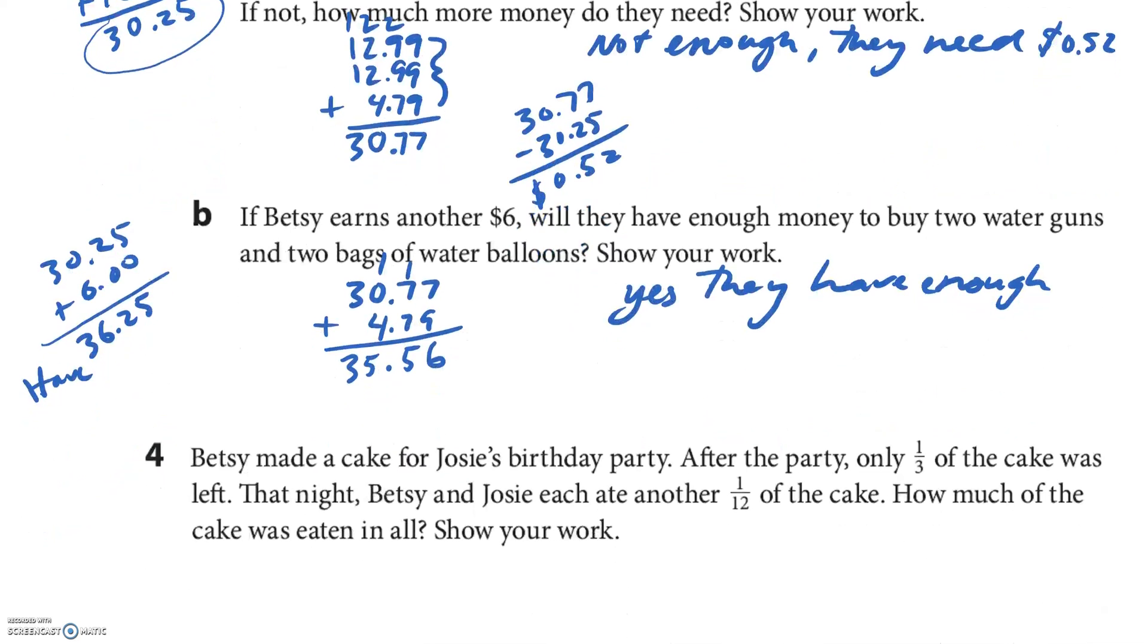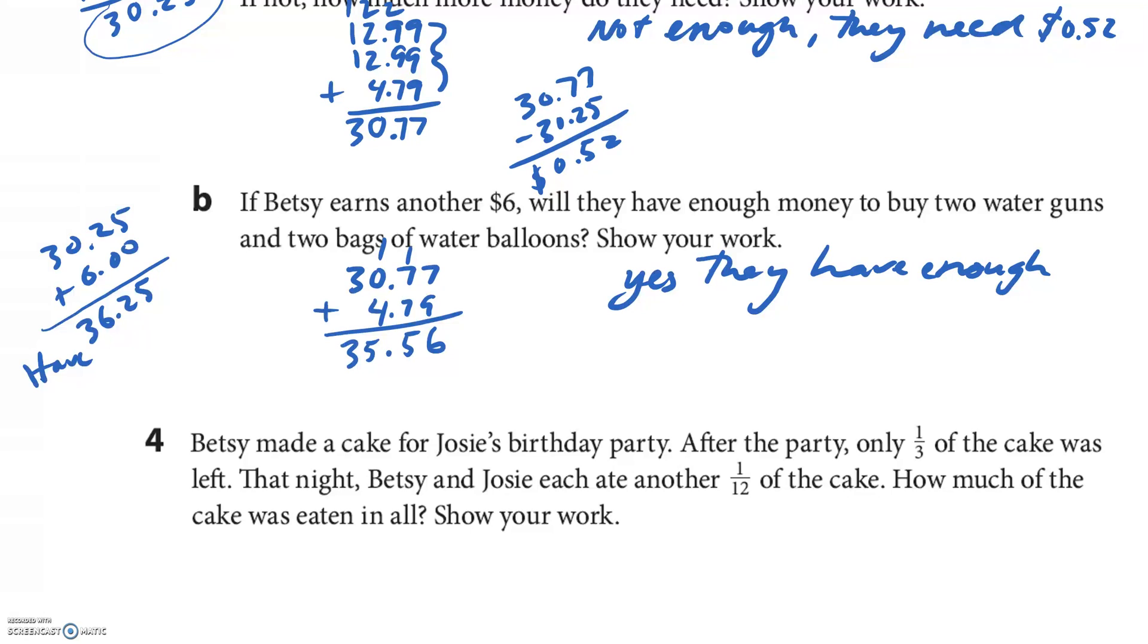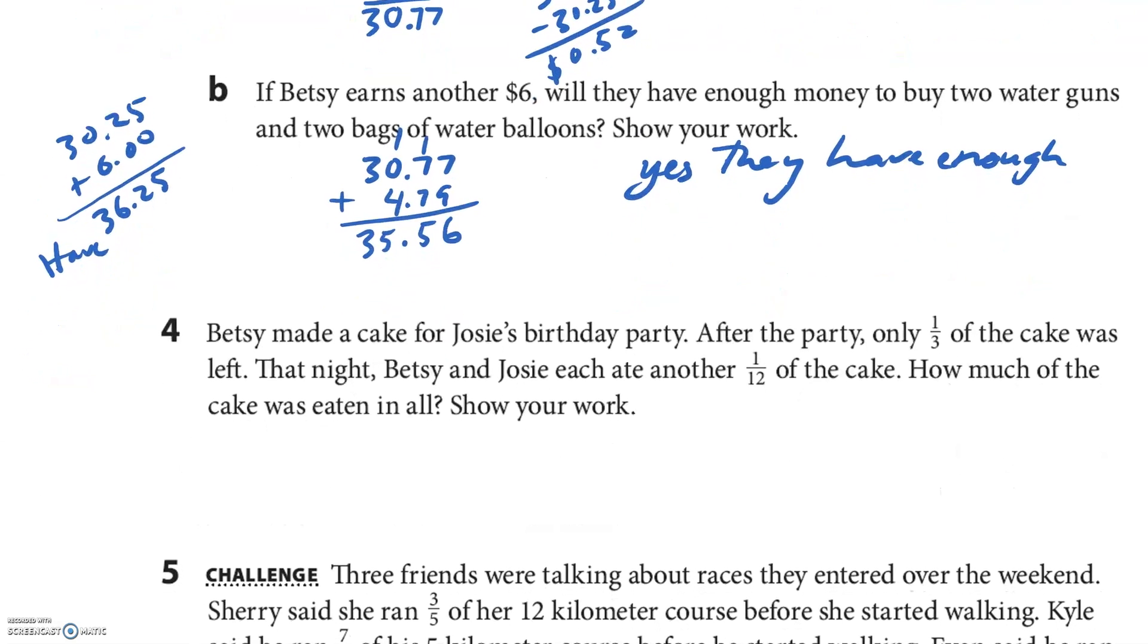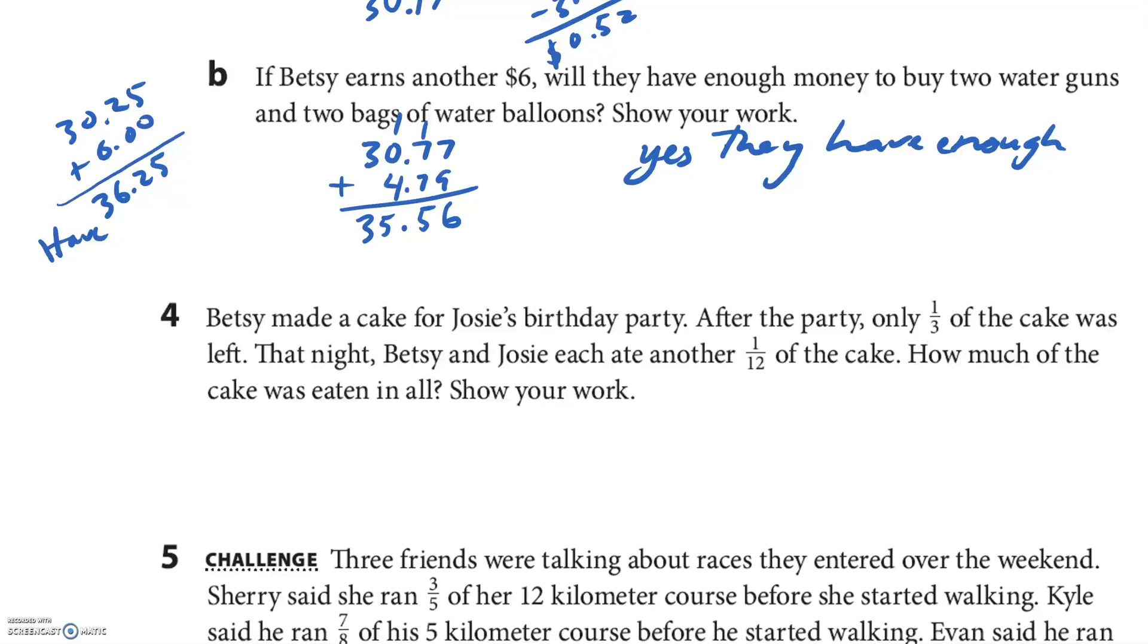All right, Betsy made a cake for Josie's birthday party. After the party, only 1/3 of the cake was left. They're totally like changing gears on us, right? Water guns to birthday cake. After the party, there was only 1/3 of the cake left. That night, Betsy and Josie each ate another 1/12 of the cake. How much of the cake was eaten in all?